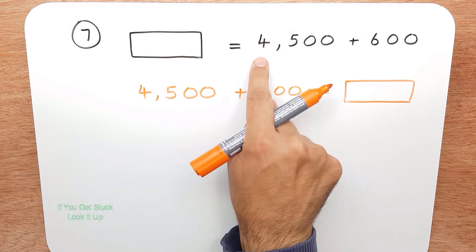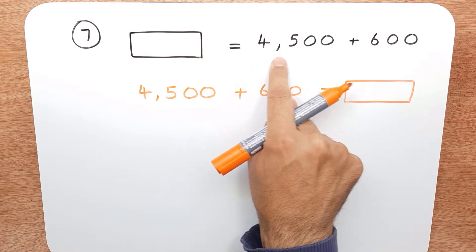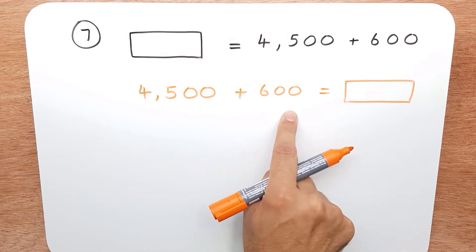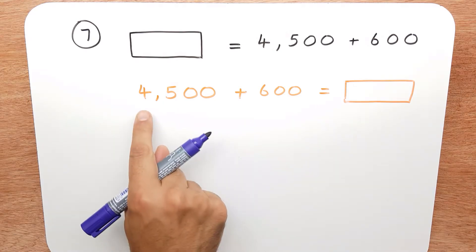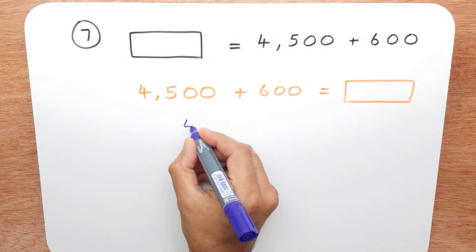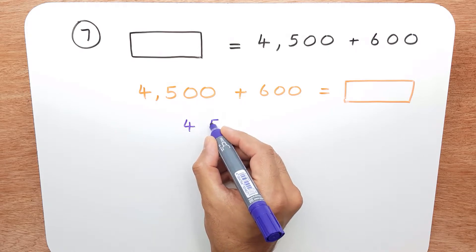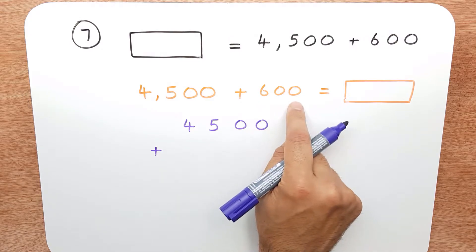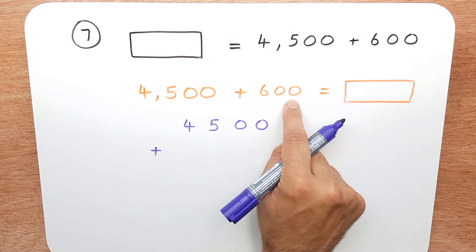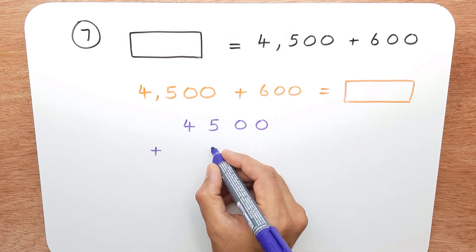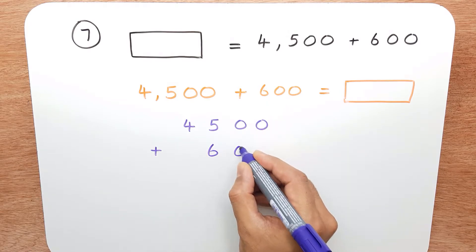It makes no difference whether you write it this way or this way. We can do column addition with this, carefully lining up each digit. So let's start: 4500 add 600. We have to be careful we put these in the right columns — that's in the hundreds column, so we have to put 600 in the hundreds column.